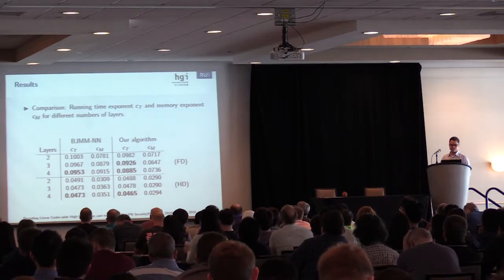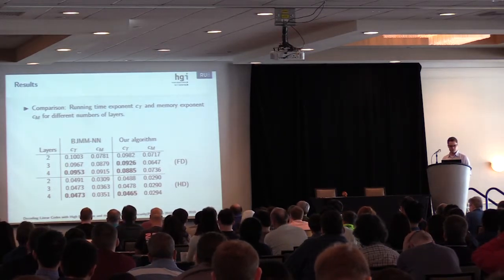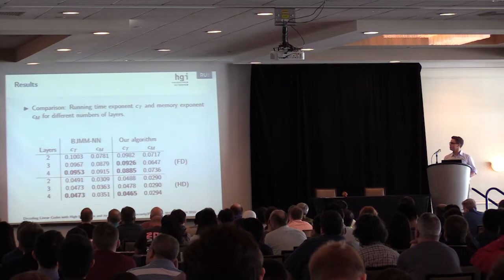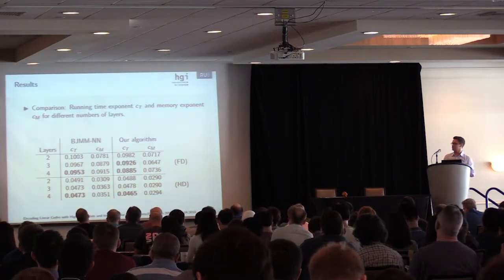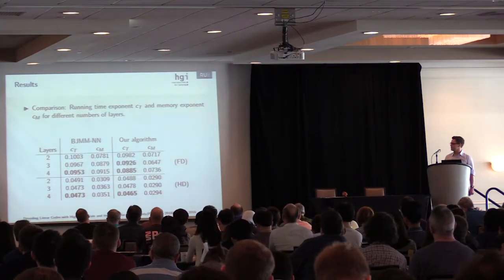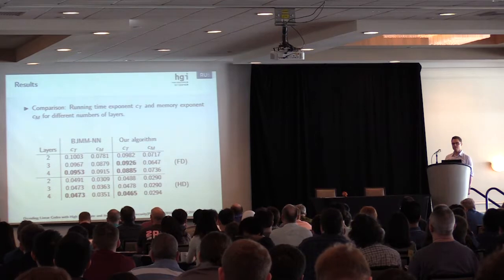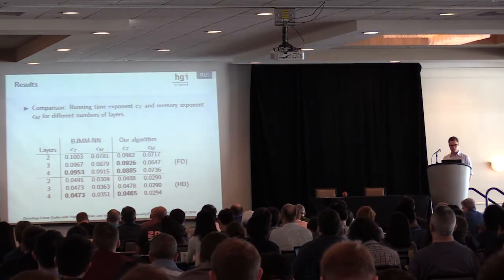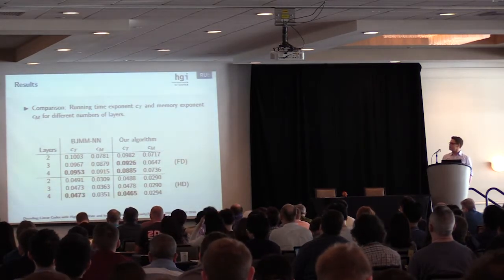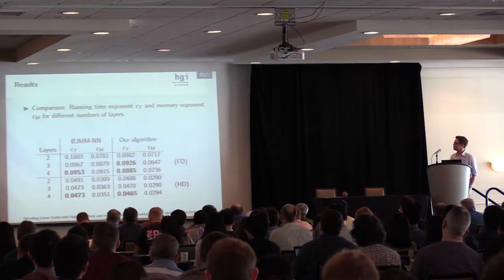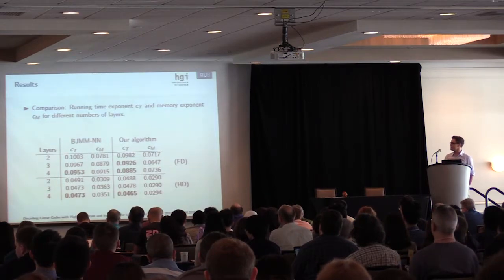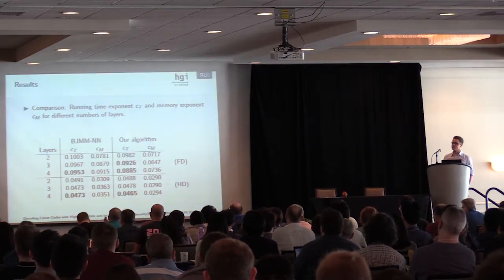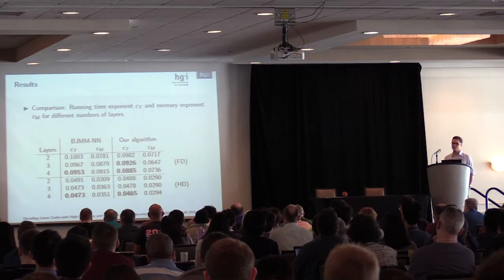Now we look at the worst case scenario and the running time exponent c_T and also at the memory exponent c_M, from the BJMM with nearest neighbors and our algorithms for different layers in the binary search tree. As you can see, the BJMM with nearest neighbors is optimal if one chooses four layers. Then we have a running time exponent of 0.0953. Our algorithm already provides a lower running time exponent if we only use three layers, and an even better running time exponent if we use four layers.